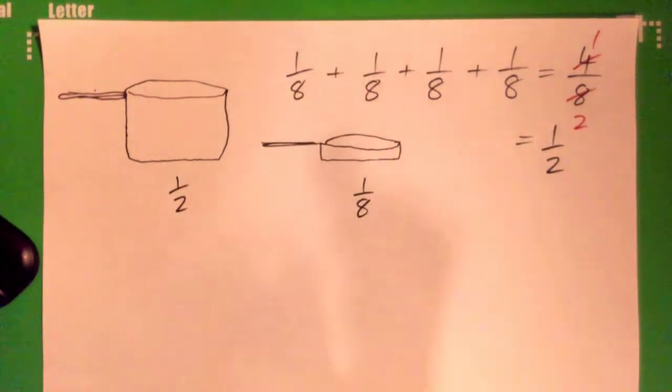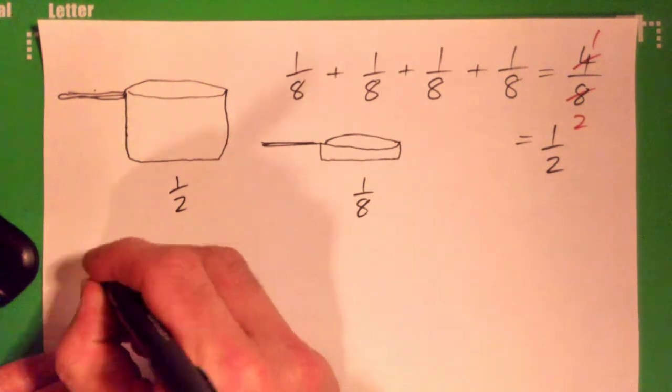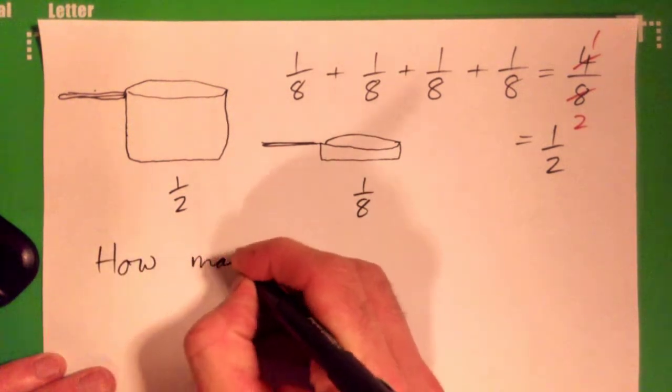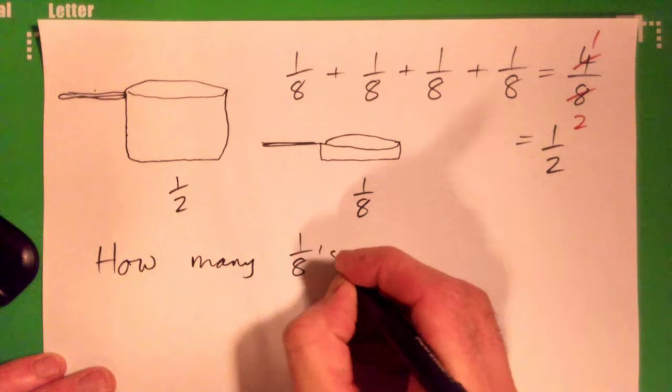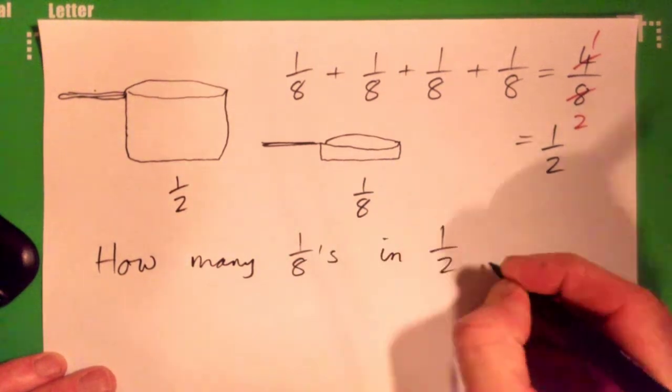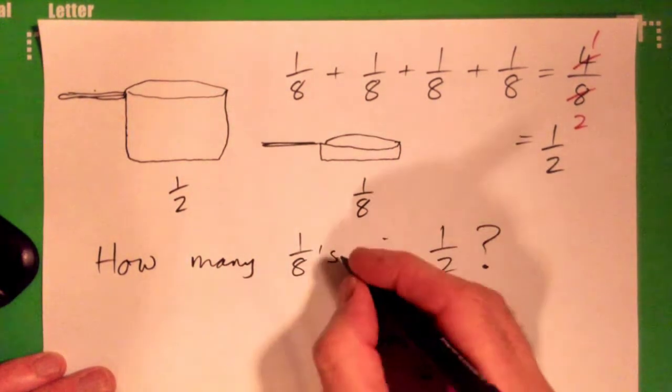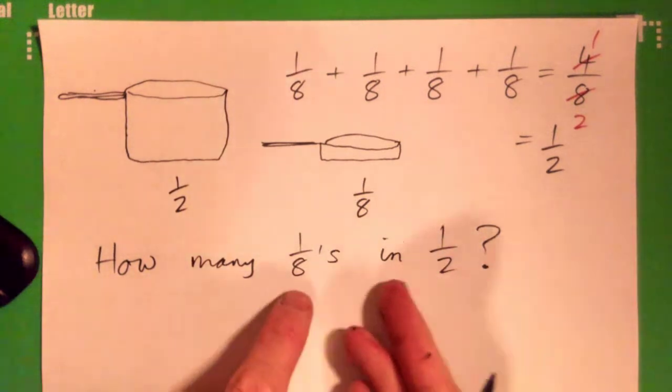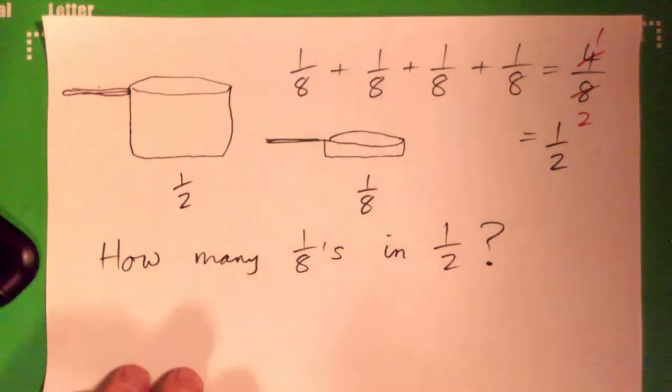So the mathy way is, you know, if I was to say, okay, how many one eighths in one half? It looks like this. Can you give me the division for this, by the way? Can you figure, do you know what that would look like if I was to use the division sign for that?